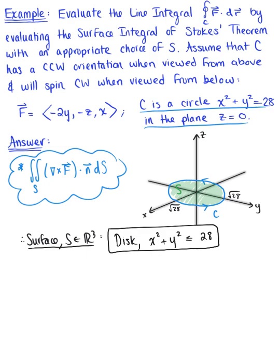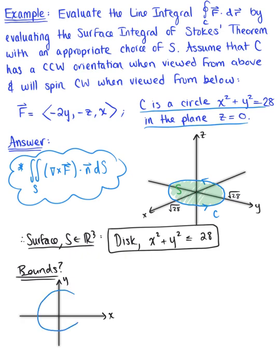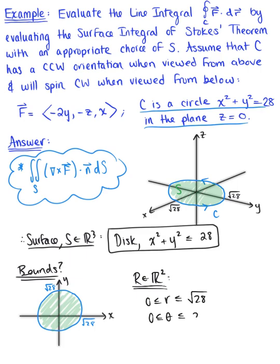Here is our surface, and we want to think about the bounds. We have the x and y axes, and we know we have a circle with a radius of the square root of 28 and the region within this circle. We could use Cartesian coordinates, but that's kind of messy. Instead, let's use polar coordinates, because we have a perfect polar region. So R in R2 is the set of all ordered pairs r-theta such that r is between 0 and the square root of 28, and theta is between 0 and 2pi.